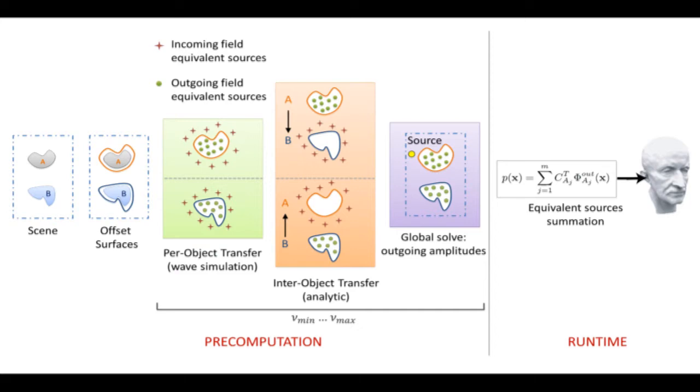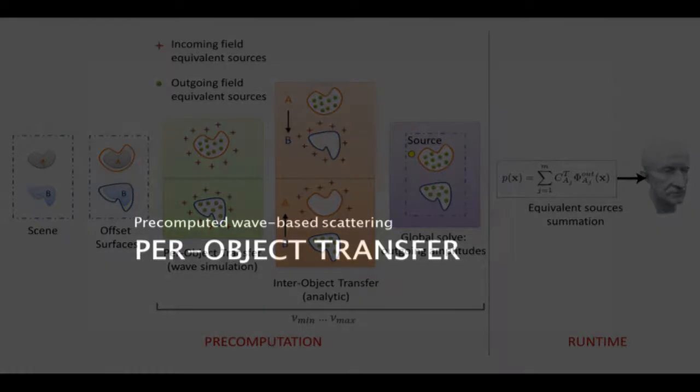This response is then convolved with dry audio to render binaural sound. We show the scattering effect of a single object as captured by the per-object transfer function.